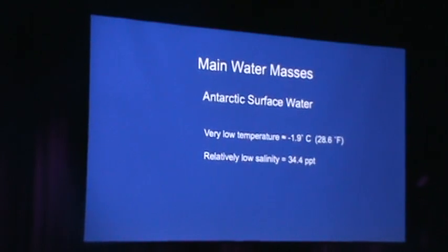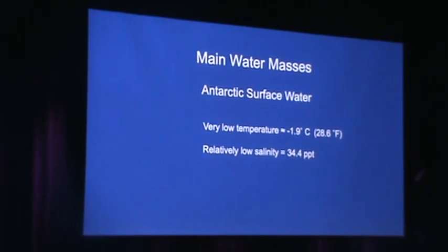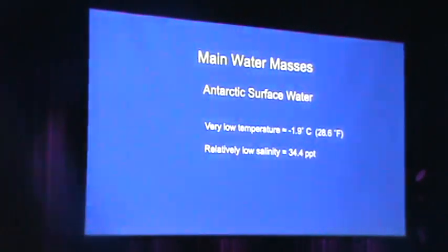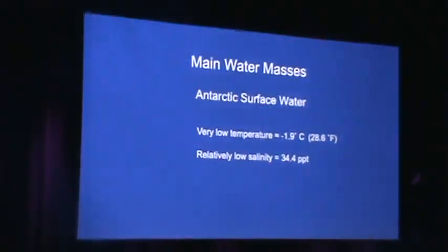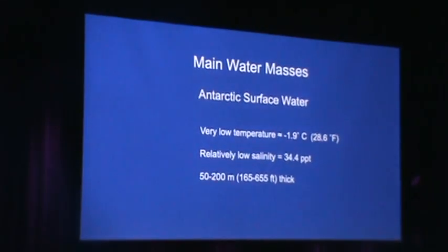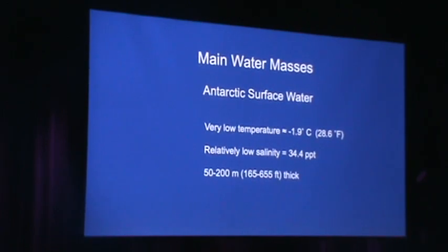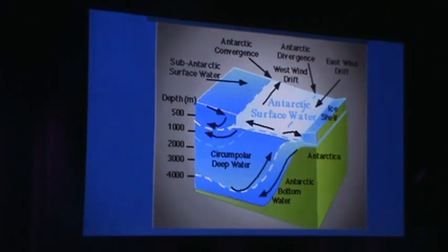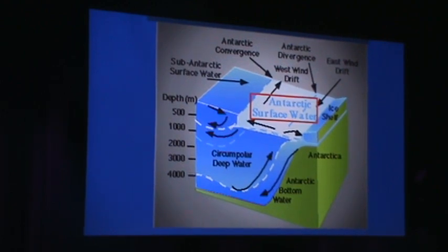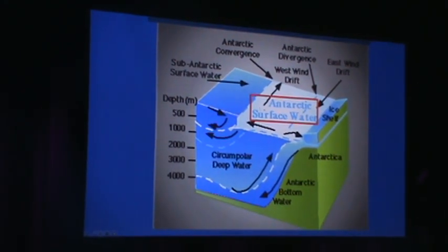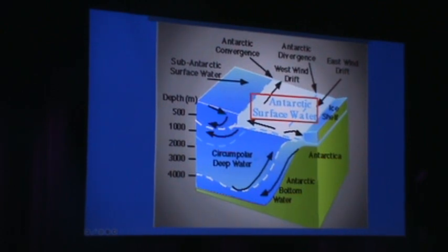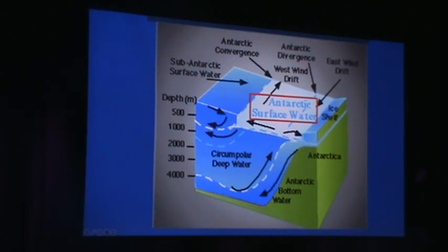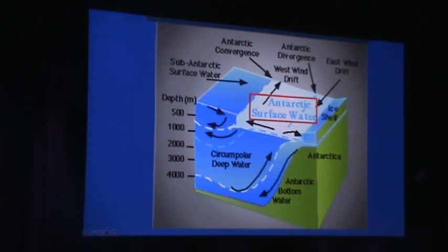So let's look at the main water masses. There's the Antarctic surface water — very low temperature, relatively low salinity at 34.4 parts per thousand, as opposed to more saline portions that go up to 34.8 or even 35 parts per thousand. It's about 50 to 200 meters in thickness, generally proceeding around the Antarctic continent driven by either the east or west wind, coming directly off the continent as a zone of surface water.